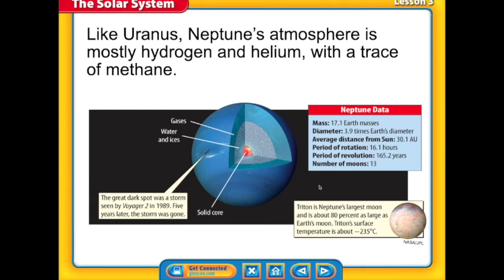Here you can see a dark spot that was spotted by Voyager 2 in the year 1989. This is a gigantic hurricane. Five years later, this storm was gone. The Hubble Space Telescope took an image and could not find this great dark spot. So unlike Jupiter and the great red spot, this dark spot did disappear.